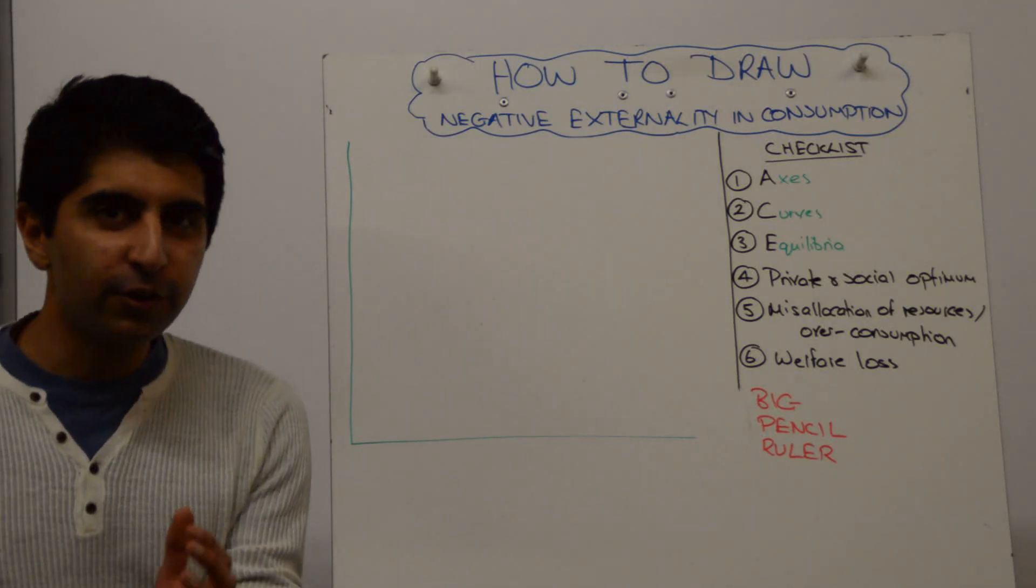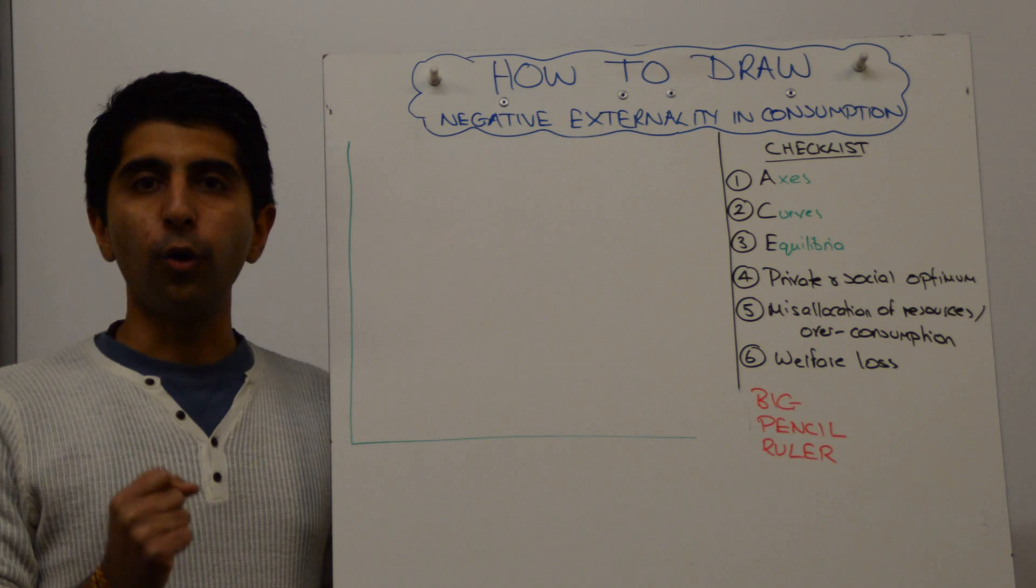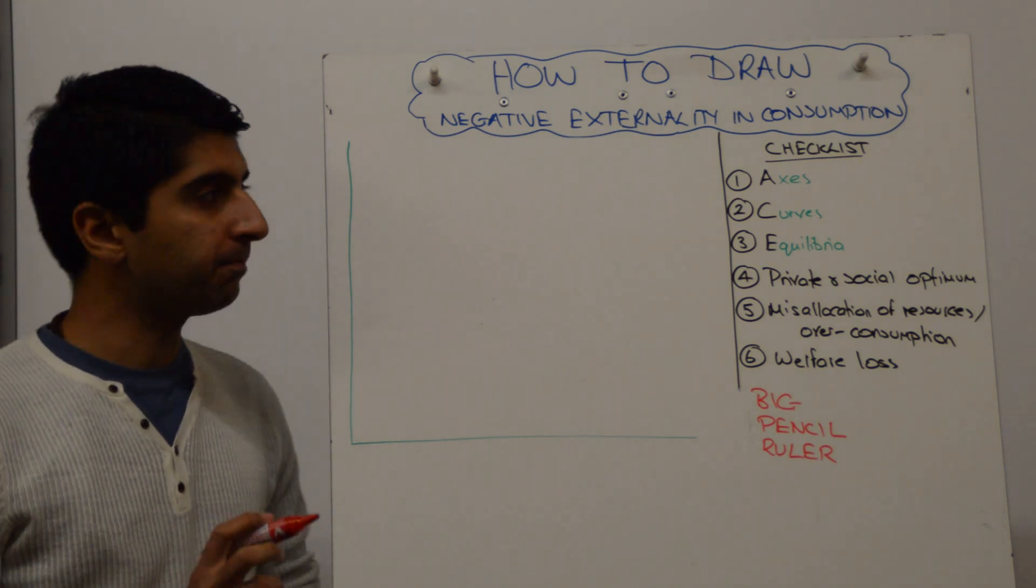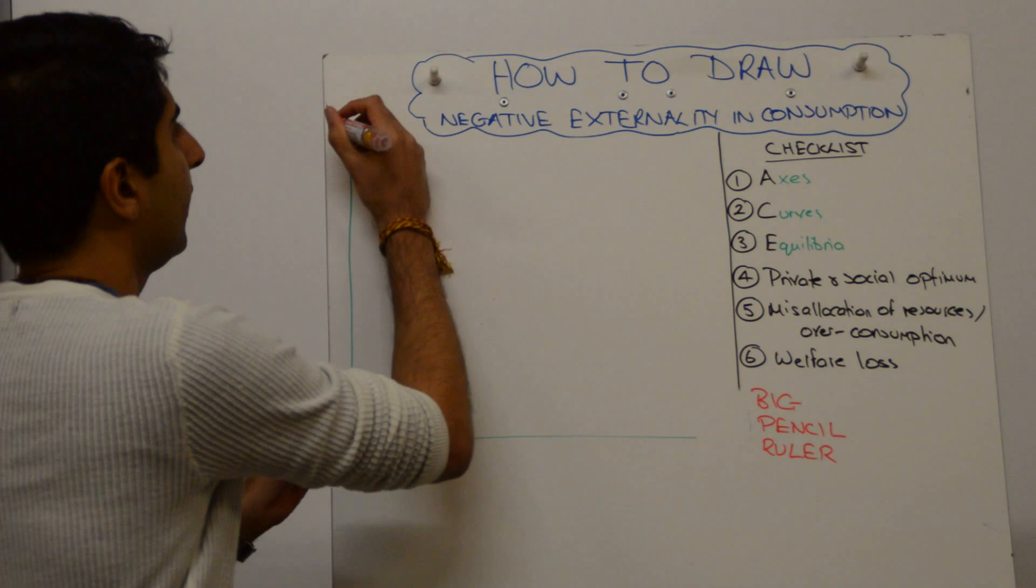Hi everybody! How to draw the negative externality and consumption diagram, which is also the demerit good diagram. Well, as always, we start with labeling our axis. Let's get moving there.